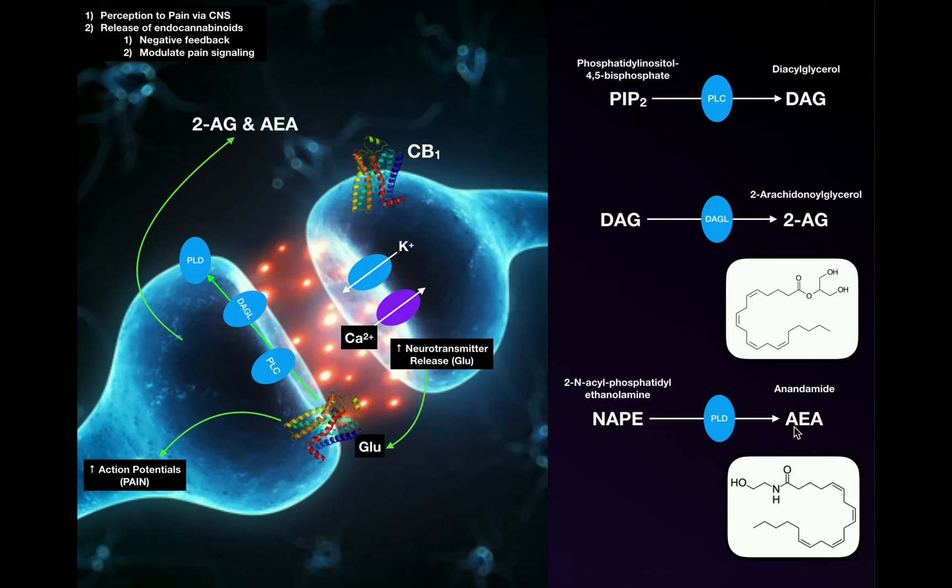There's another one abbreviated AEA. This is anandamide, also derived from arachidonic acid. They are made by your own cells.